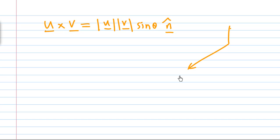So you have this picture with U and V. U cross V will be in this direction following the right-hand rule, and the length of U cross V will be the length of U, length of V, sin theta, where theta is the angle between U and V.